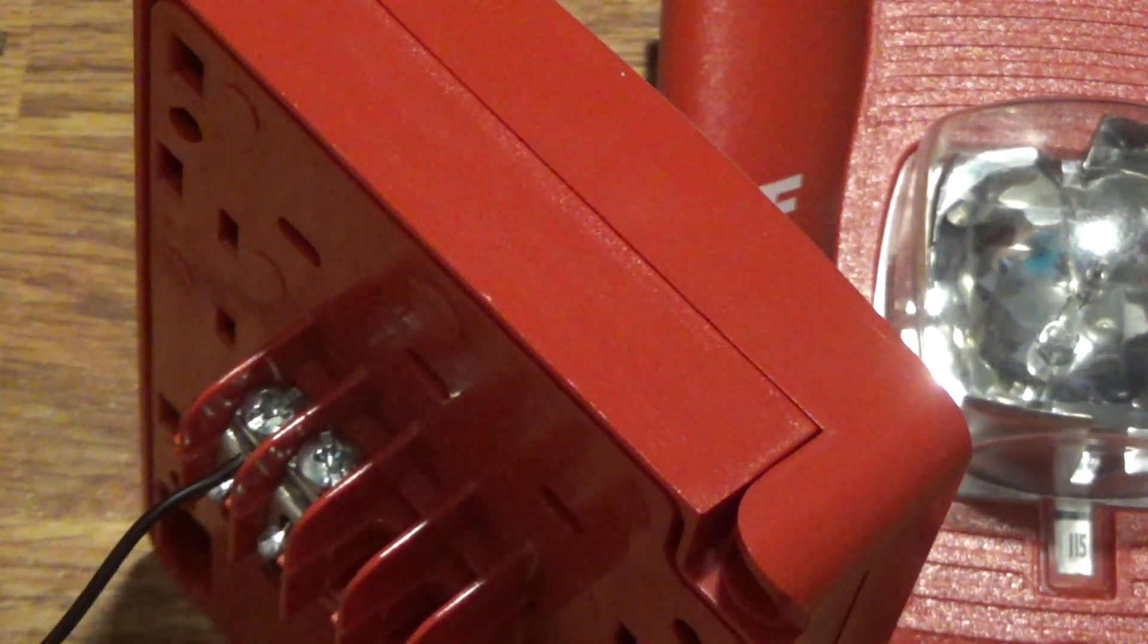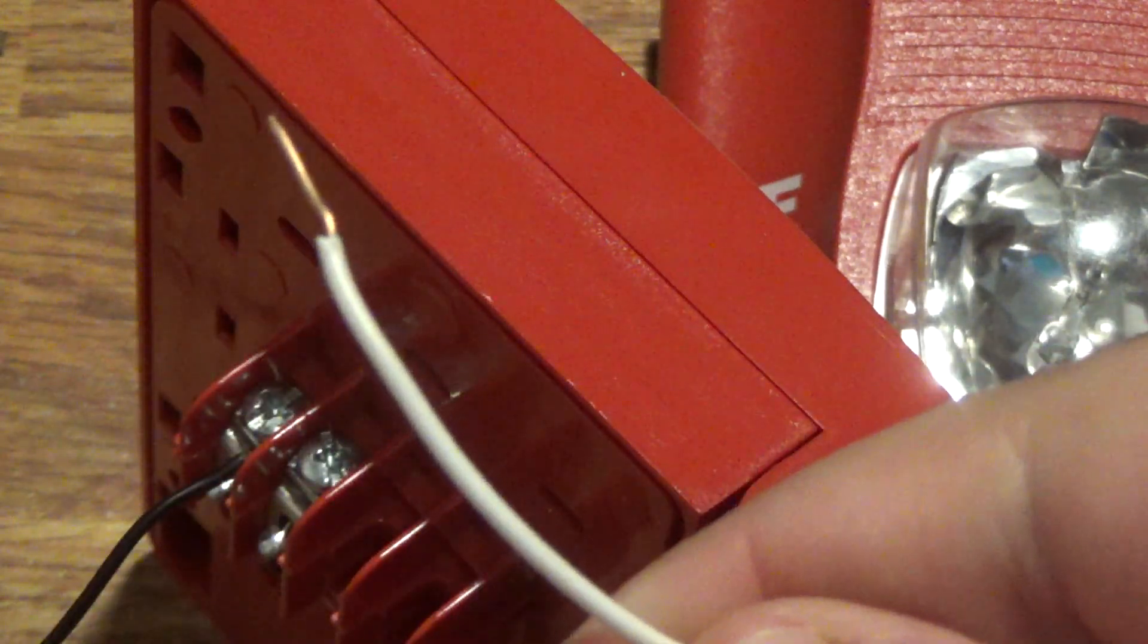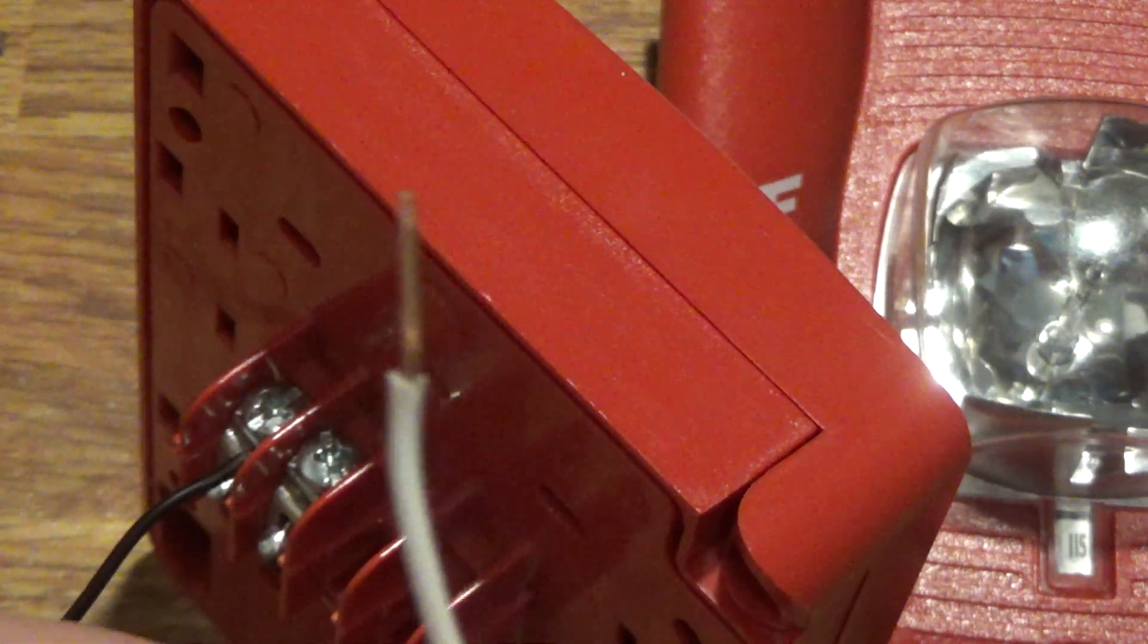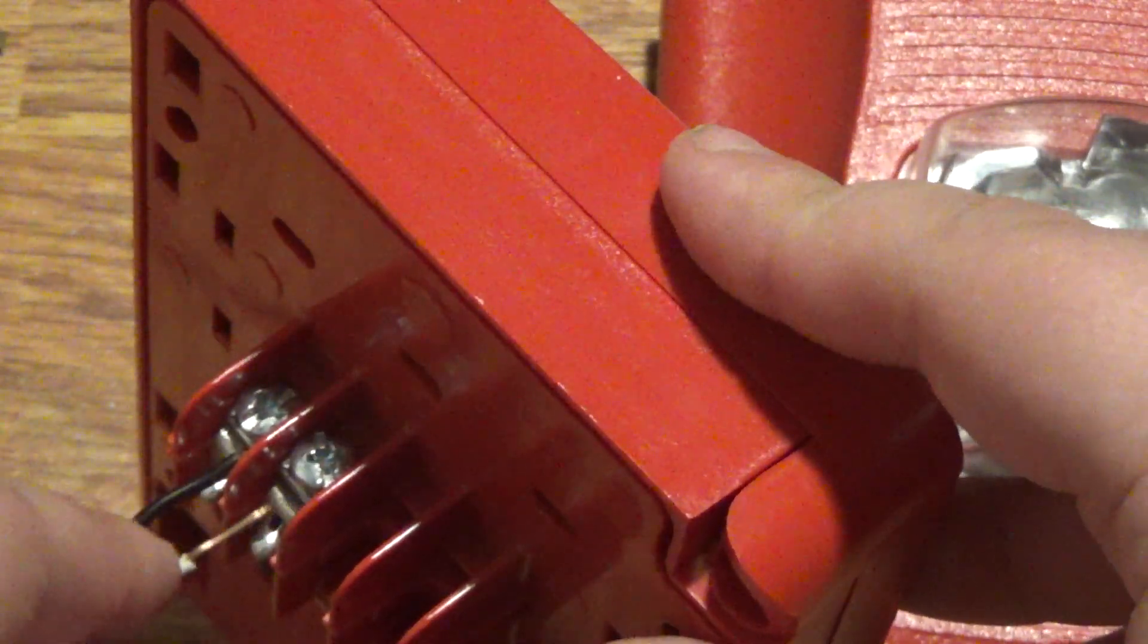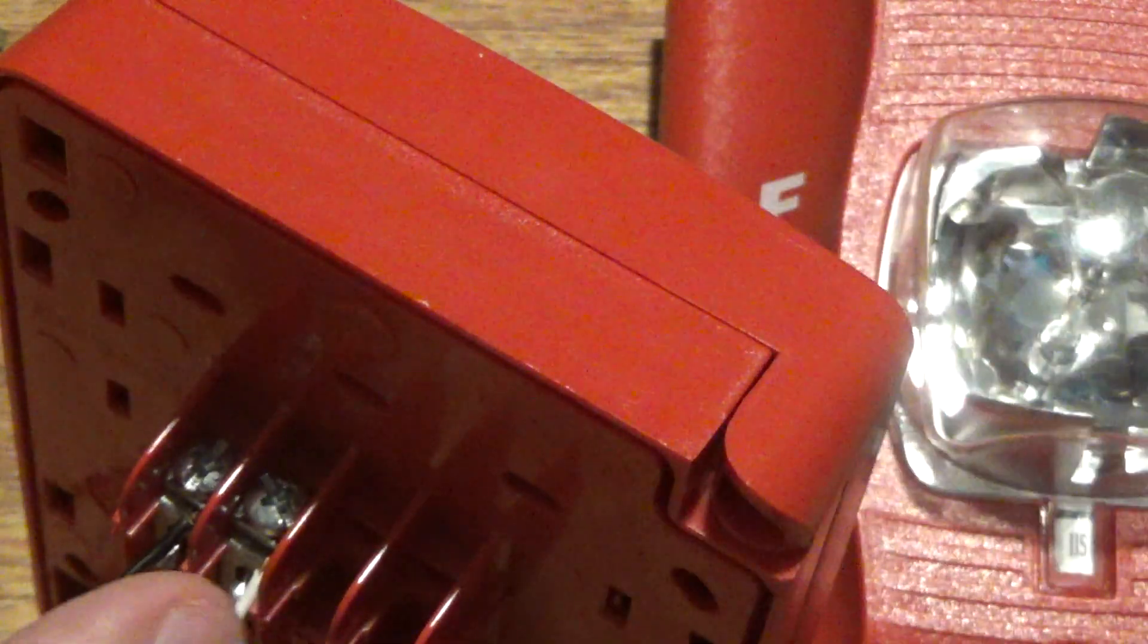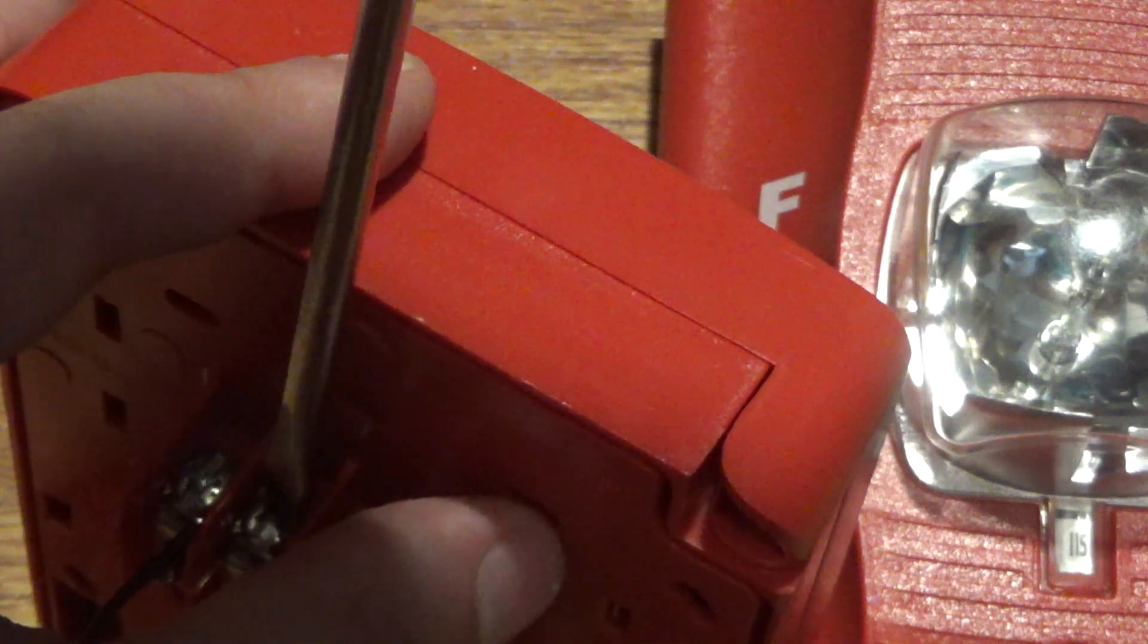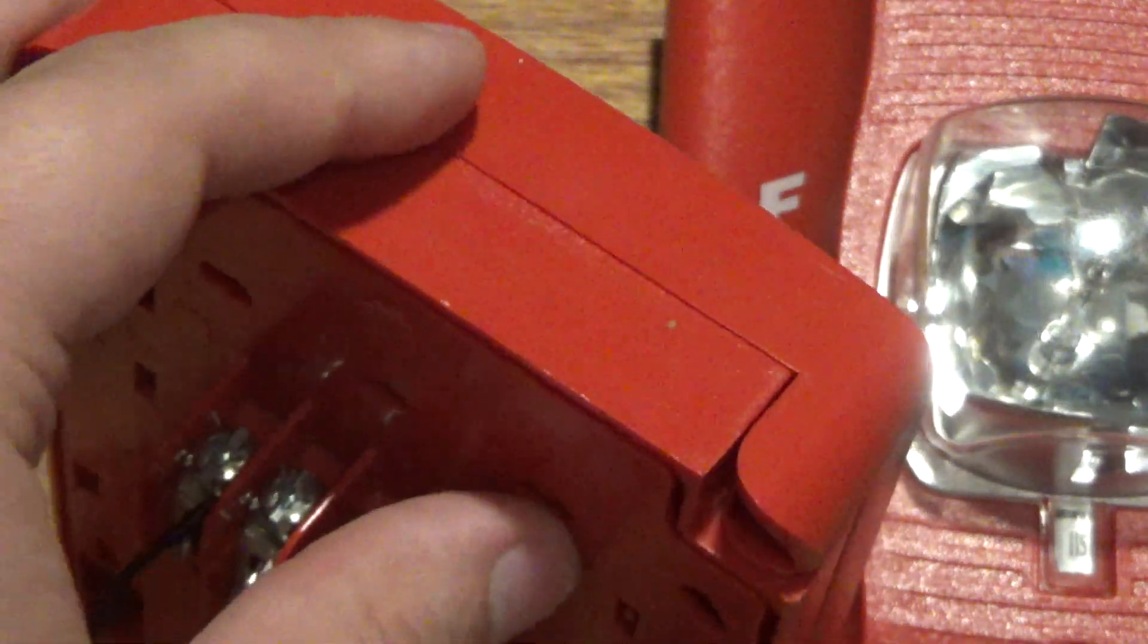And then next, you want to take a remaining wire lead, which is a little bit long, and then you insert one end of this wire lead into the positive terminal. And then you screw it down and tighten it. Okay. The pull station wiring is complete.